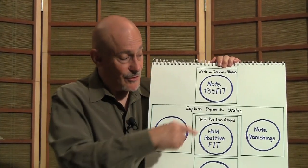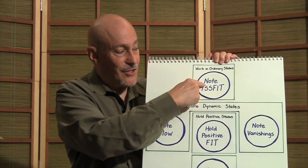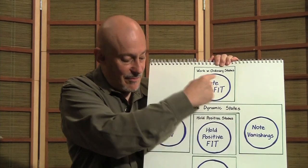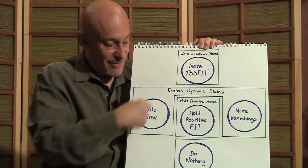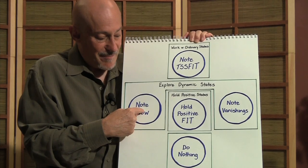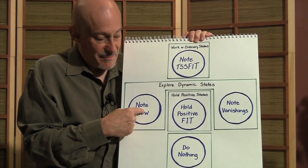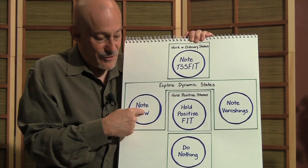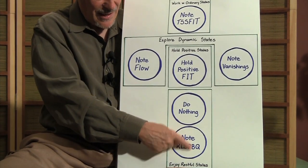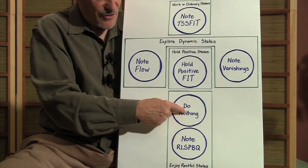And that's how it works. So let's say you start with ordinary states. Well, maybe there's a lot of flow, or maybe there's a lot of vanishing, so you explore that. Or maybe you start with restful states, you want to start there and things get pretty restful, so okay, now let's drop the efforting, let's do nothing.